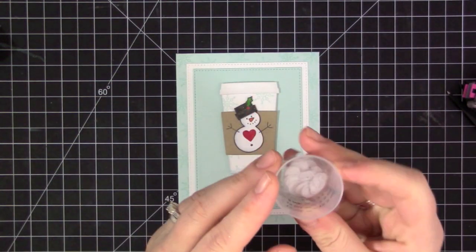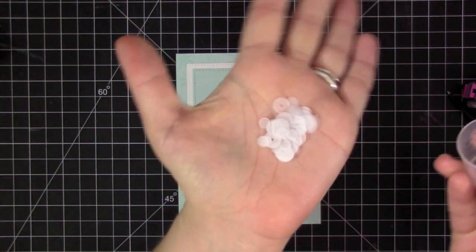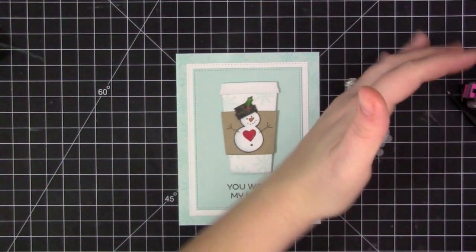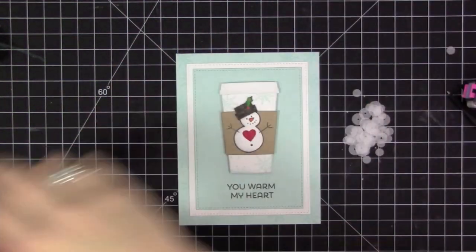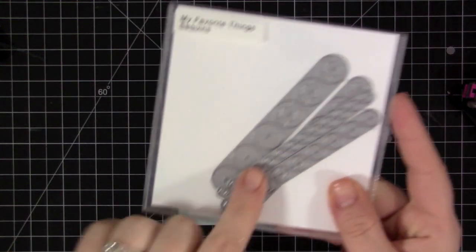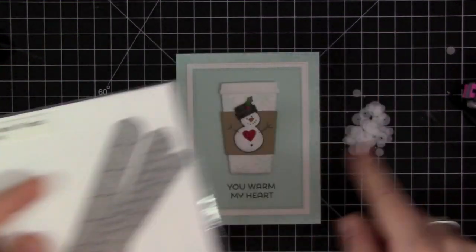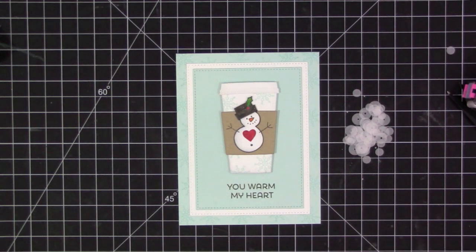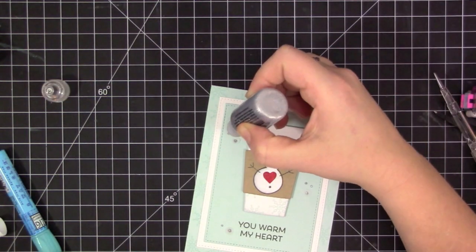So now I have that adhered onto the card, I'm going to go ahead and add some sequins. And I like to use these little medicine cups that come with medications for children. If you have kids I'm sure you have a million of these around the house. I kind of keep a few of them around on my desk to hold little things like this.